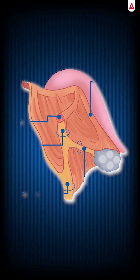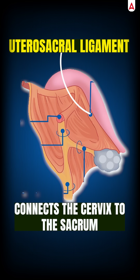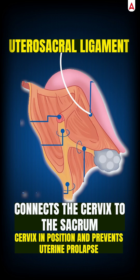Third is the Uterosacral Ligament. It connects the cervix to the sacrum. It holds the cervix in position and prevents uterine prolapse.